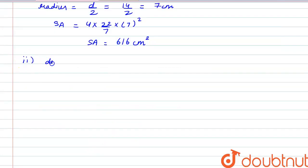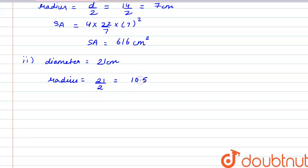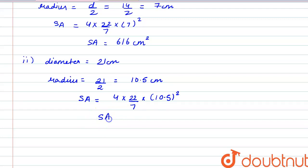In the second part, we are given that the diameter is 21 cm. So the radius here will be 21 by 2, that is 10.5 cm. The surface area comes out to be 4 × (22/7) × 10.5² = 1386 cm².